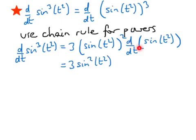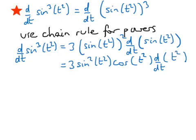We want to differentiate sine of t squared, which is the sine of a function, so again we use the chain rule. The derivative of sine is cosine, so we have the cosine of whatever it is, multiplied by the derivative of whatever was in the argument of the sine, which was t squared. That derivative is just 2t. We can bring it to the front, multiply it by 3, giving us 6t.